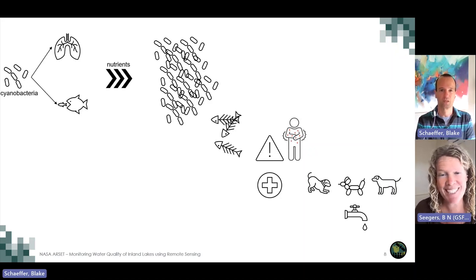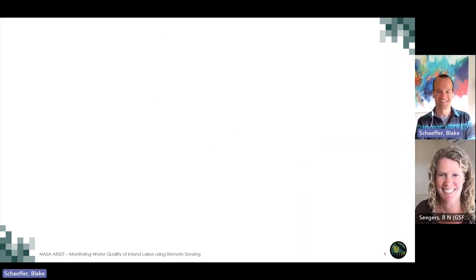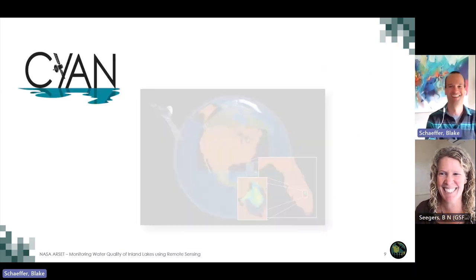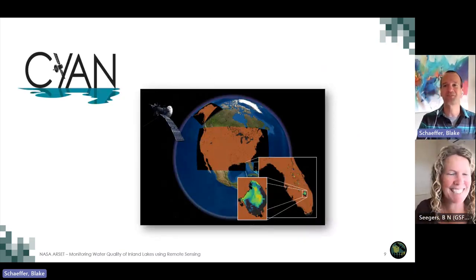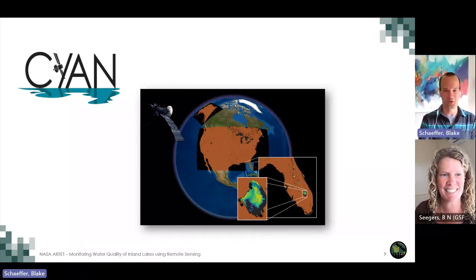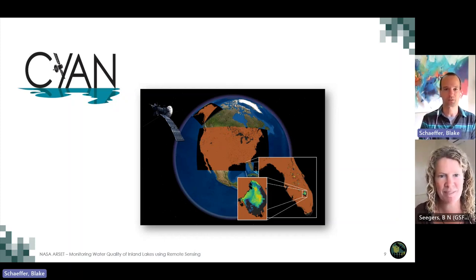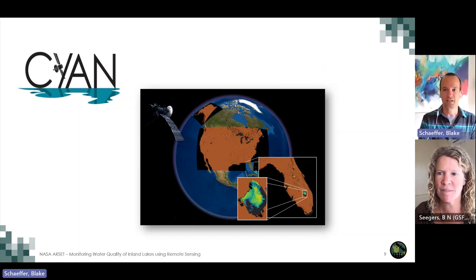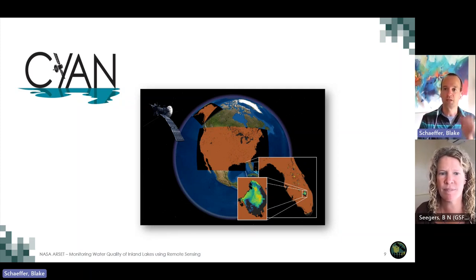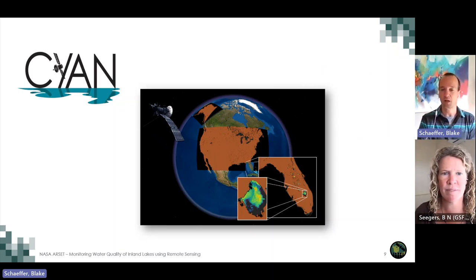There are a lot of lakes in the United States, and we can't watch all of them all the time for these cyanohabs. Or can we? We're starting to, at least. In 2015, the U.S. Environmental Protection Agency, NASA, and USGS partnered together to develop the Cyanobacteria Assessment Network. This Cyanobacteria Assessment Network, called CyAN, uses satellite technologies to detect cyanohabs in the largest U.S. freshwater lakes — about 2,200 of them. This network supports federal, state, tribal, and local partners in their monitoring efforts to protect aquatic, animal, and human health.